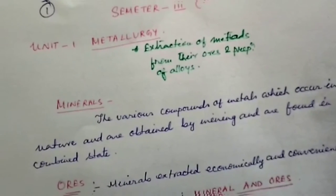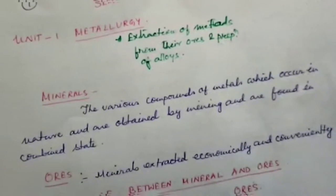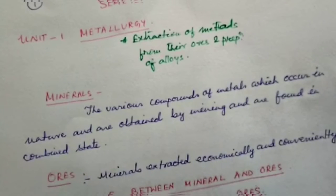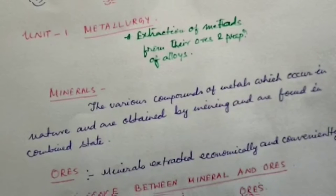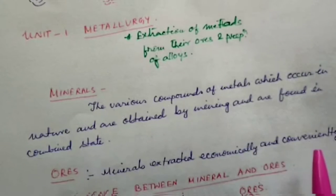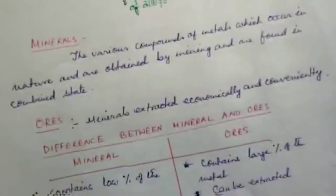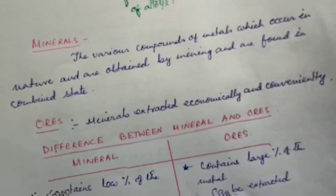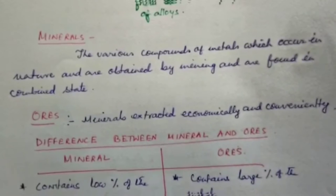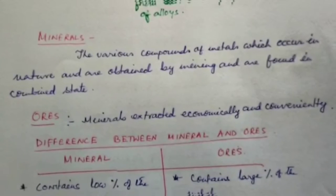Let us discuss the fundamental ideas of minerals and ores. What are minerals? Minerals are the various compounds of metals which occur in nature and are obtained by mining. In other words, minerals are compounds of metals found in the earth in which the metals are present in the combined state. These minerals from which metals can be extracted economically and conveniently are called ores.